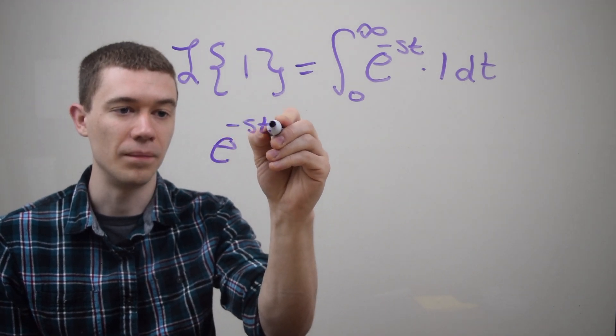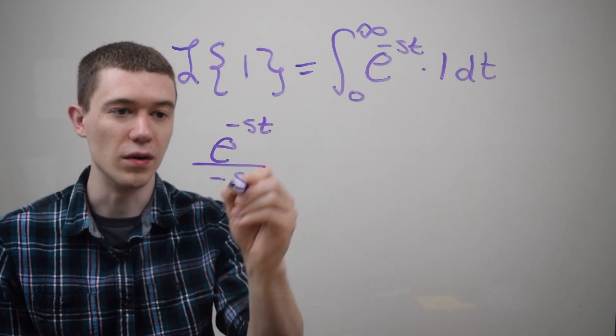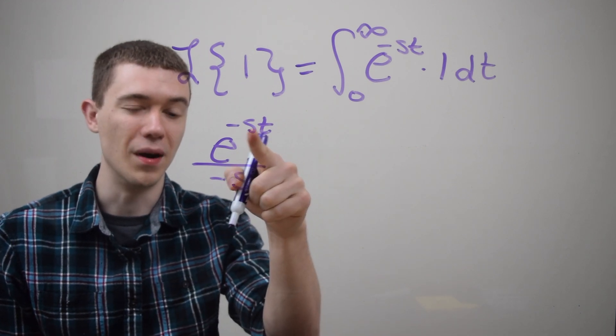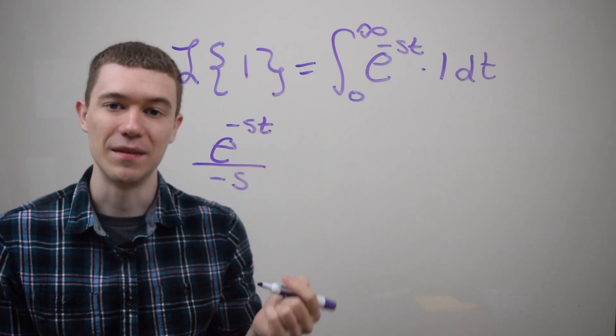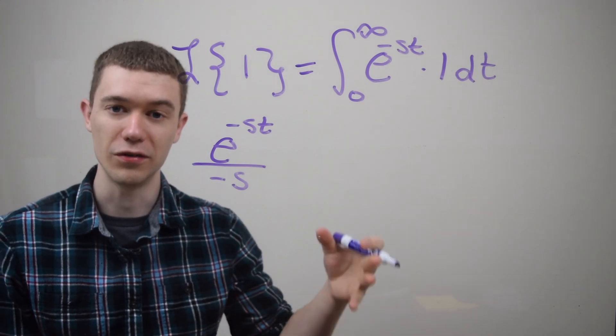But just remembering that I need to divide by the derivative of the exponent, just dividing by the derivative of minus st, and that's simply because of a u substitution I'm kind of glossing over here just for time's sake.